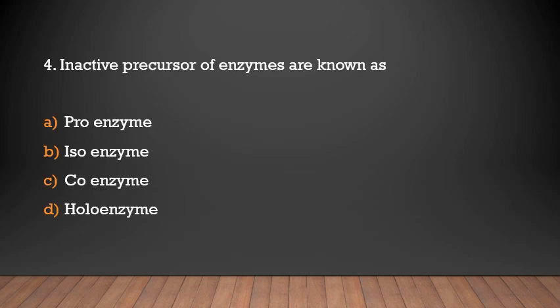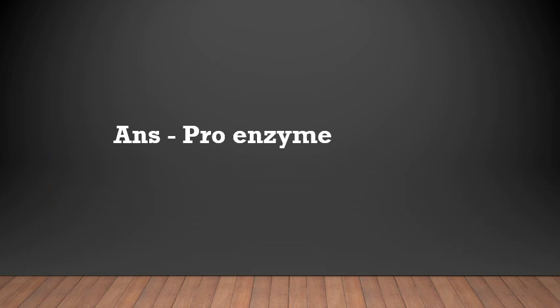Inactive precursor of enzymes are known as: proenzyme, isoenzyme, coenzyme, or holoenzyme. Answer: Inactive precursor of enzymes are known as proenzyme.